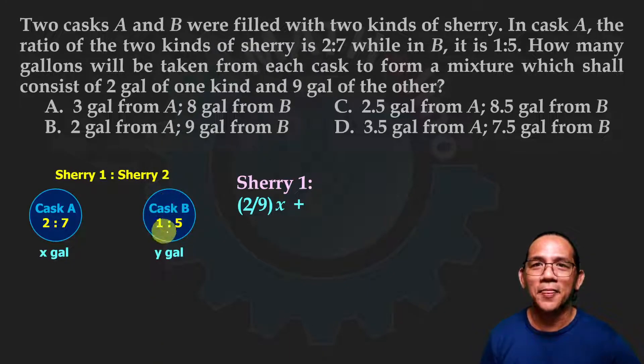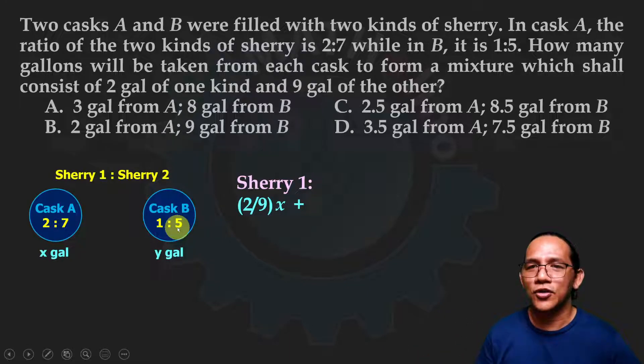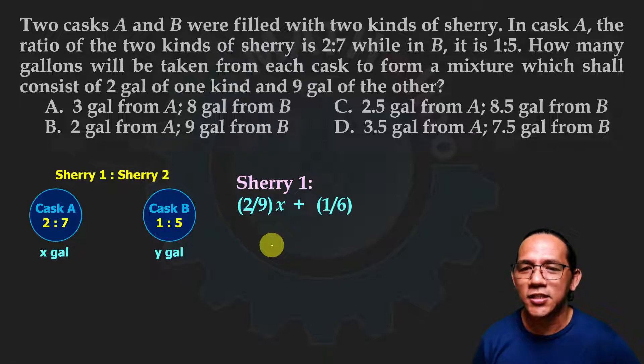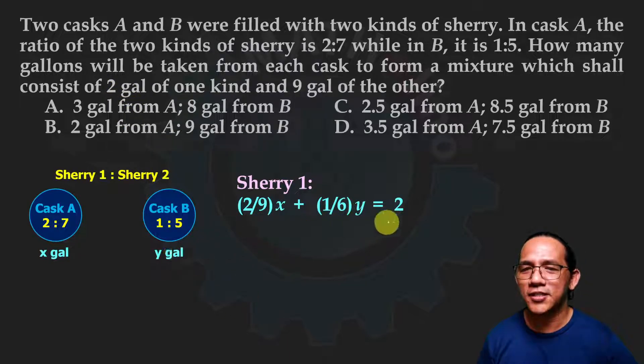Plus, you'll also take from here y gallons. The proportion here is 1 to 5, meaning six parts total. One part of sherry one, five parts of sherry two. When you take from there, we're talking about one out of six for sherry one alone, times y gallons. A total of two gallons.